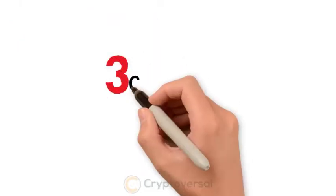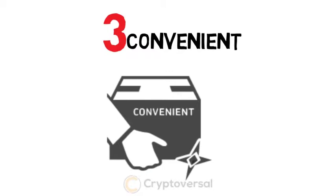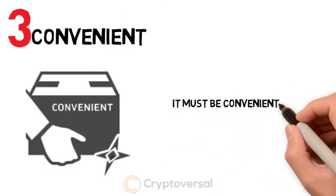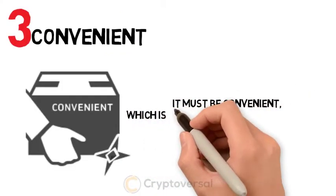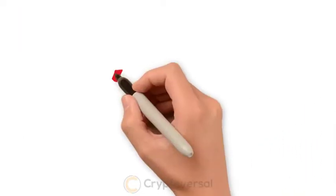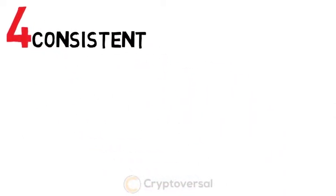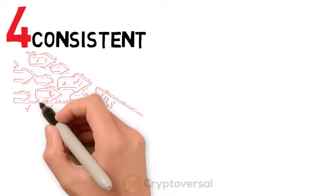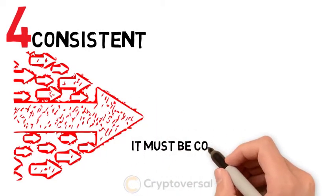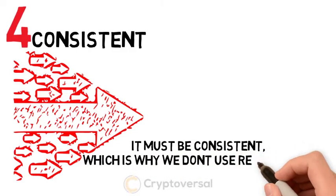Number three: convenient. It must be convenient, which is why we don't use lead or copper. Number four: consistent. It must be consistent, which is why we don't use real estate.